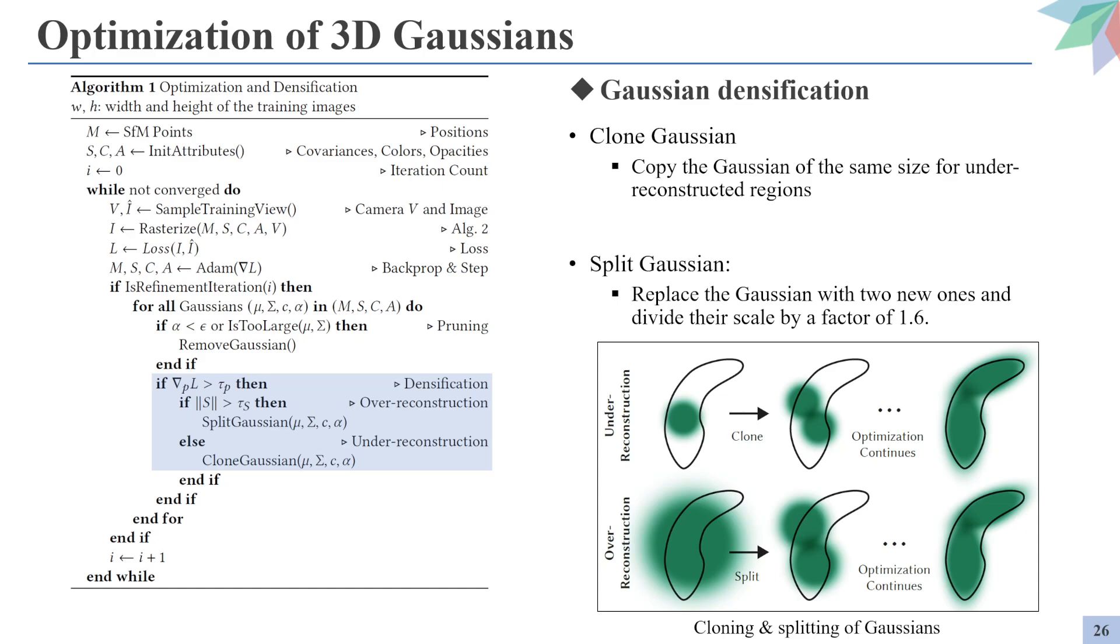The second method is called Gaussian densification. It focuses on regions with missing geometric features, also referred to as under-reconstructed, but also in regions where Gaussians cover large areas in the scene, which is also referred to as over-reconstructed areas. And during the experiment, the authors observed that the Gaussians located in both areas have large view-space positional gradients, and they decided to select the Gaussians whose view-space positional gradient is larger than the threshold for densification. So they set a threshold for the covariance of the Gaussians, and if the covariance of the Gaussians is larger than the threshold, the area is declared over-reconstructed, and the Gaussian is split into two new ones, with their size scaled by a factor of 1.6.